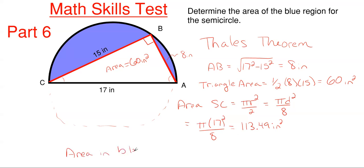So the area in blue, which probably should write that in blue instead of red but oh well, missed opportunity there. So area in blue, you know screw it we'll write it in blue. Area in blue is going to be my semicircle area of 113.4 inches squared minus the area of my triangle which is 60 inches squared. So that gives me a total area in blue of 53.49 inches squared.